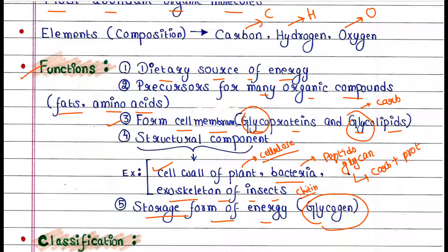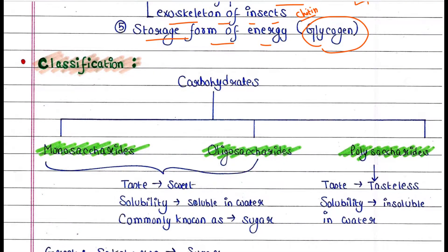Let's talk about the classification of carbohydrate. So carbohydrates are mainly of three types: monosaccharide, oligosaccharide, and polysaccharides.